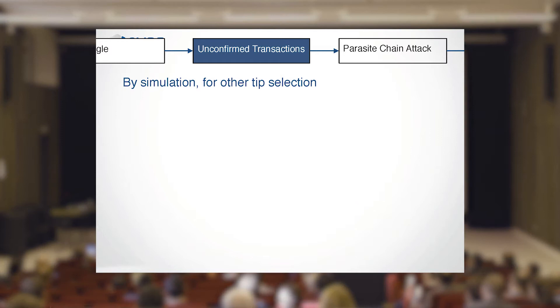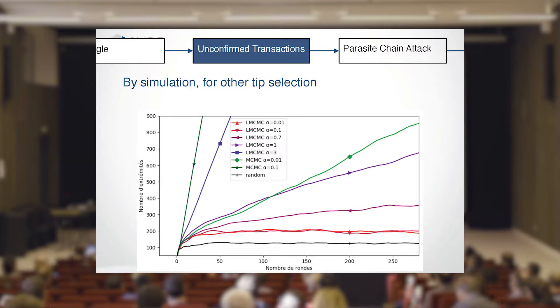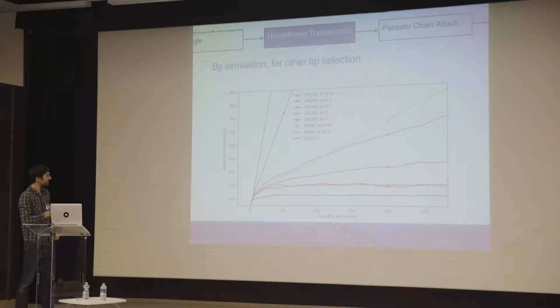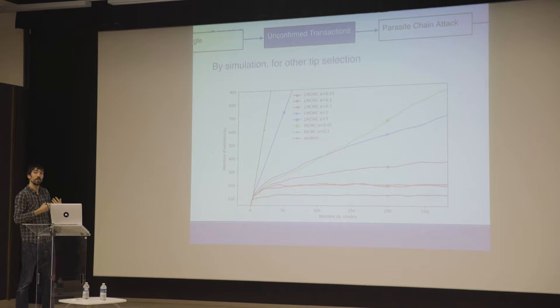What about the random walk tip selection algorithm? I ran simulations comparing different tip selection strategies. With random uniform selection the number of tips remains constant. But some other tip selection algorithms cause the number of unconfirmed transactions to grow linearly, which is bad. Last year the algorithm used in IOTA was actually one of those bad ones — that's why there were many unconfirmed transactions. They've since changed to a much better algorithm, now close to constant.